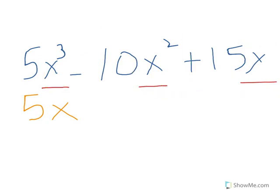Let's start. 5 divided by 5 gives me 1. X cubed divided by X gives me X squared. Minus 10 divided by 5 is 2. X squared divided by X is X. Plus 15 divided by 5 is 3.